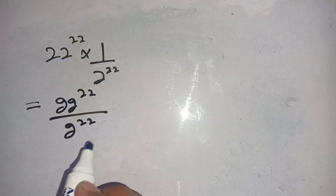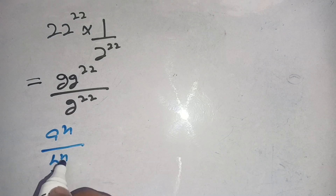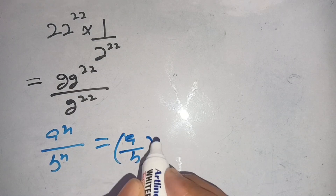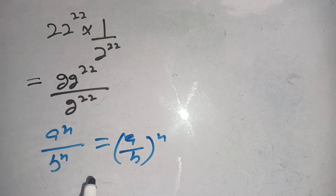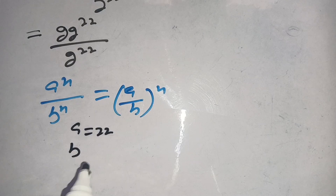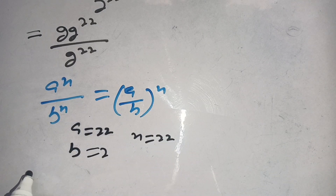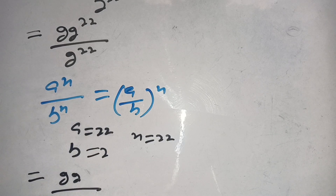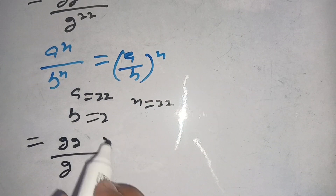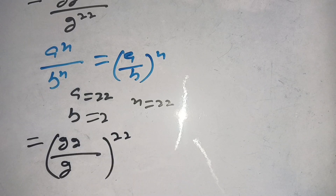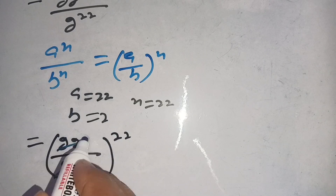We know that a power n divided by b power n is equal to (a divided by b) whole power n. Here a is 22, b is 2, and n is 22. So in place of a we put 22, in place of b we put 2, and whole power n we put 22. Now 22 divided by 2 gives 11, so it becomes 11 power 22.